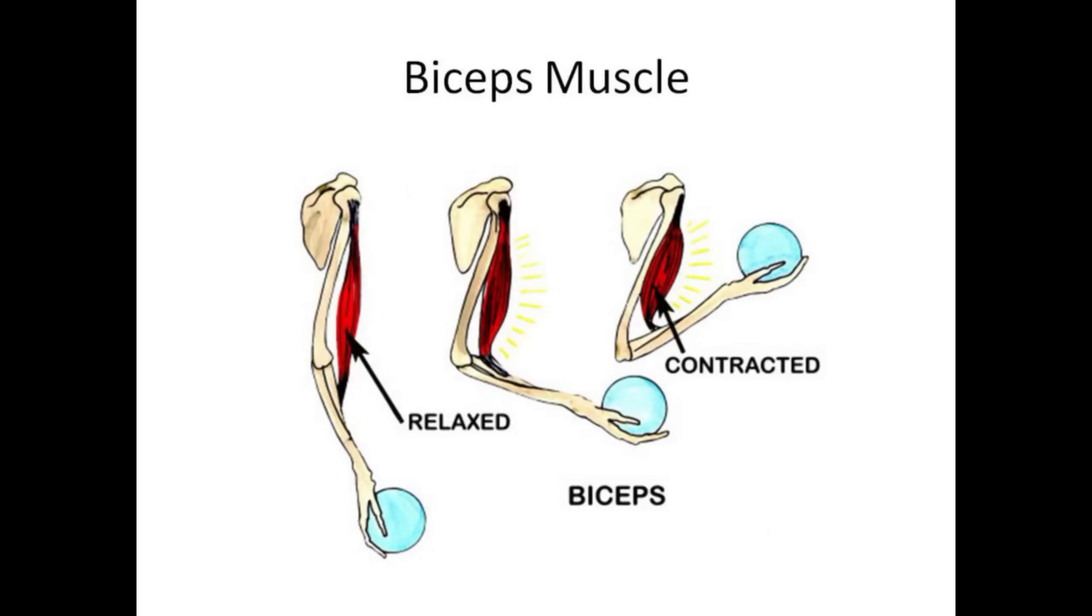The model arm used in this lab simulates the action of the biceps muscle on the forearm. The biceps attaches to the forearm a short distance from the elbow joint. Contracting and relaxing the biceps muscle allows the forearm to be raised or lowered.